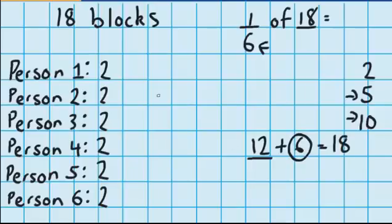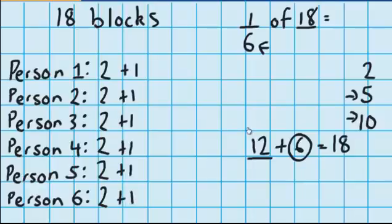It's easy for me to share 6 blocks between these 6 people — it just means I'm going to give everyone one more block. So you can see everyone got 2 blocks, then they got one more block, so in total they all got 3 blocks. So 1 sixth of 18 is 3.